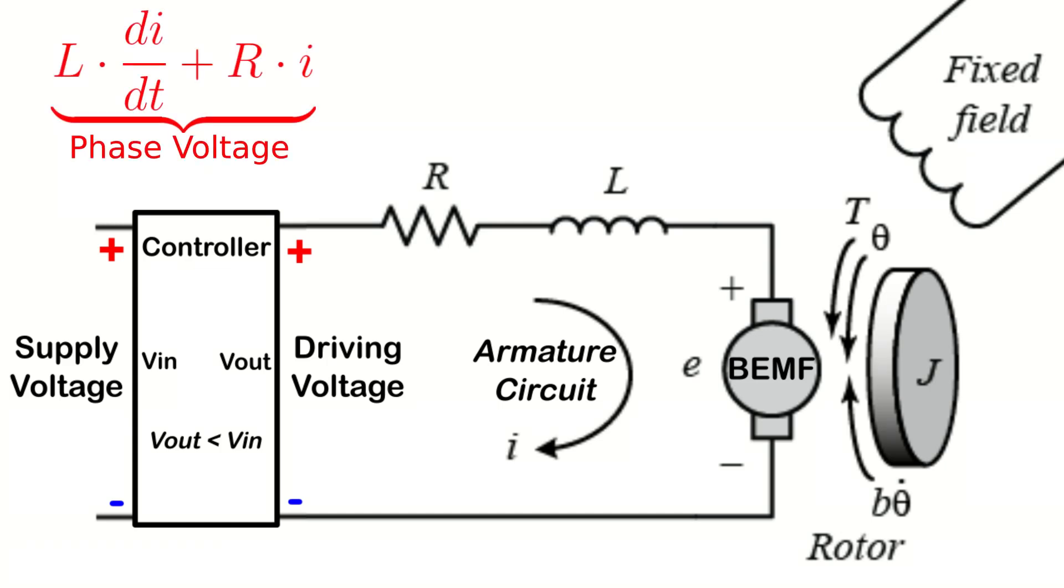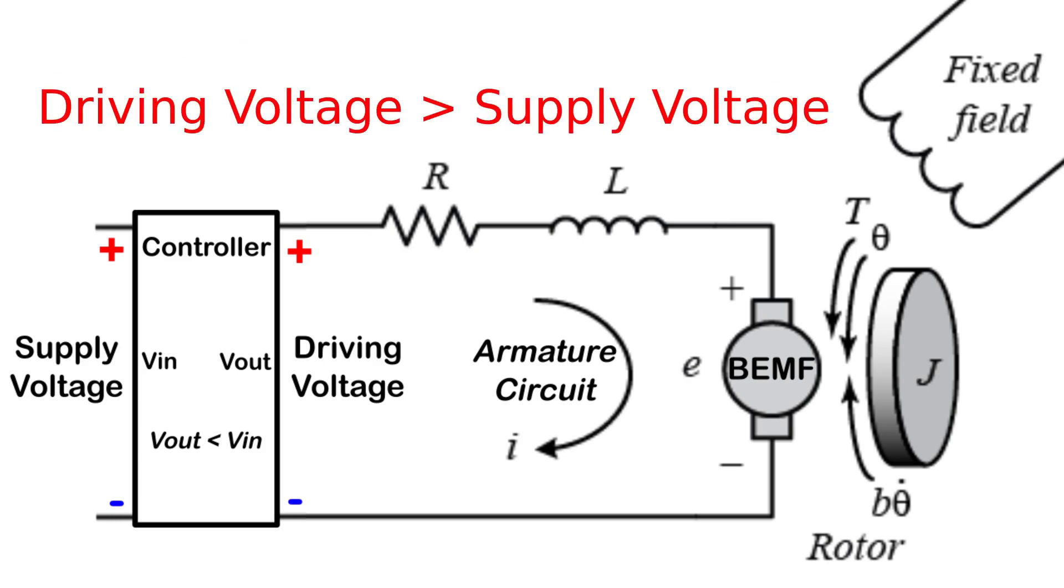The voltage on the phases, which will generate the current, is the difference between the driving voltage, which depends on the supply voltage and the controller, and the back EMF. The field weakening technique tries to tackle a scenario where the required driving voltage is higher than the supply voltage, which isn't possible.